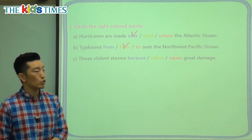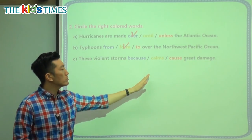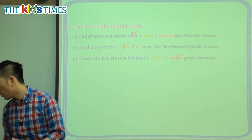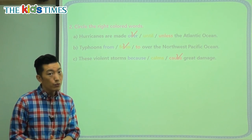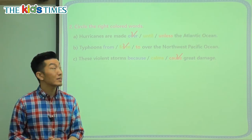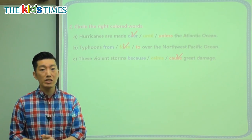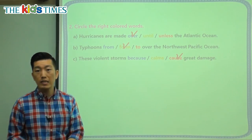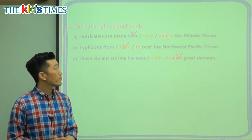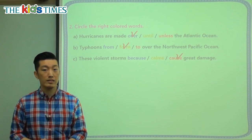And lastly, these violent storms — violent means not very calm, not gentle — these violent storms cause great damage, not 'calms.' Hurricanes and typhoons create or cause great damage. I hope you and I never have to experience something so dangerous. But now we know why they happen: when water gets warm and moist air goes up and starts swirling over the ocean. Hurricanes and typhoons are the same thing — hurricanes form in the Atlantic, typhoons form over the Northwest Pacific Ocean. Let's use these words: form, cause, over, typhoon, and hurricane.